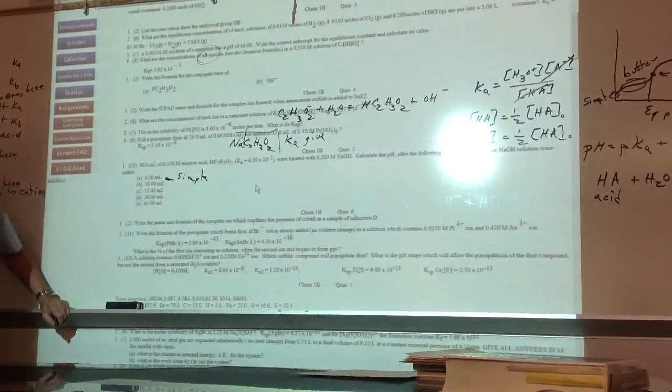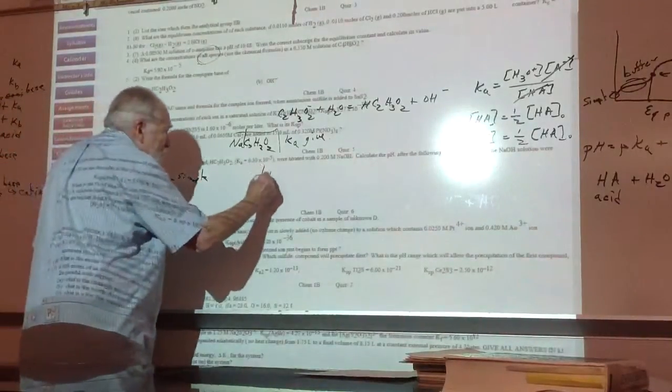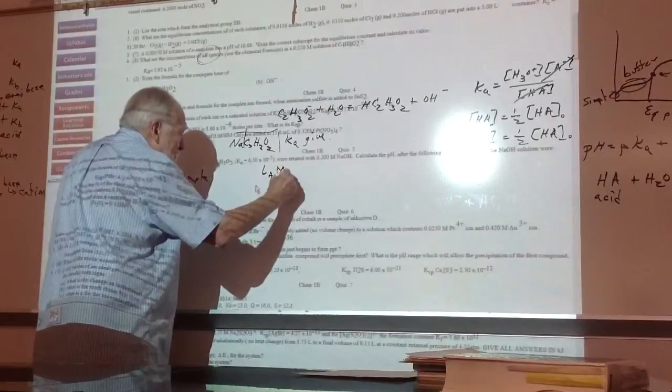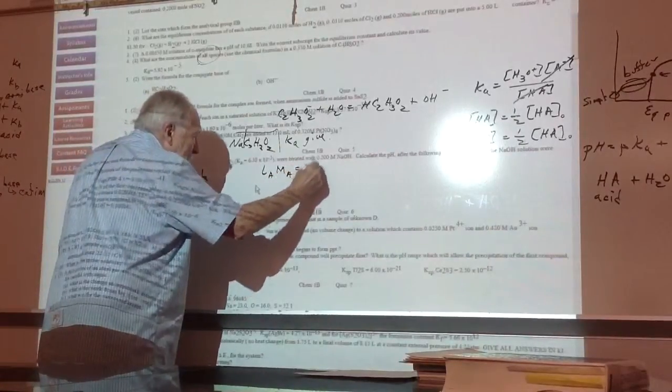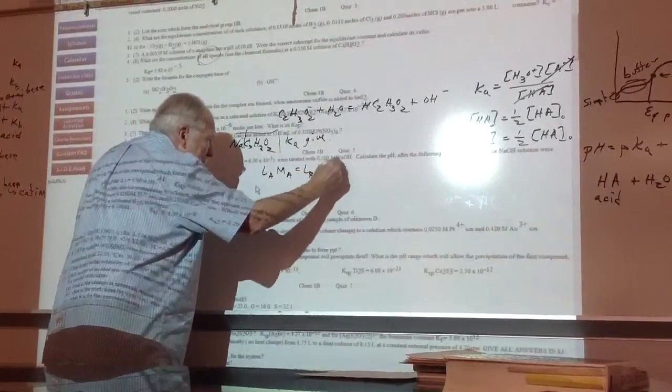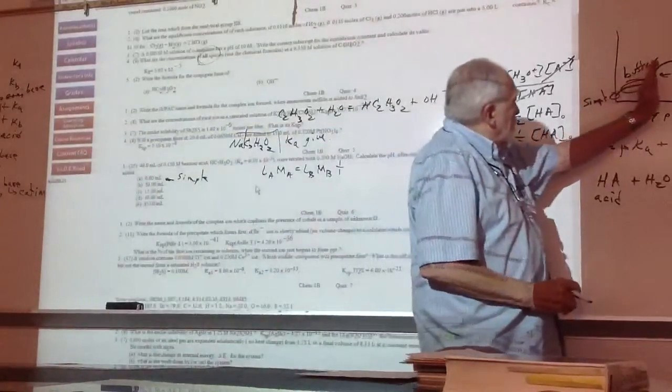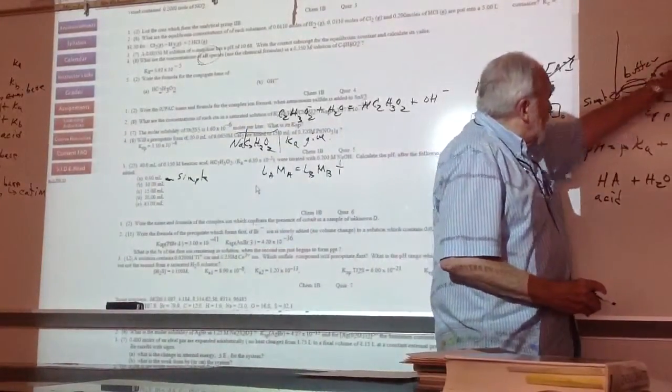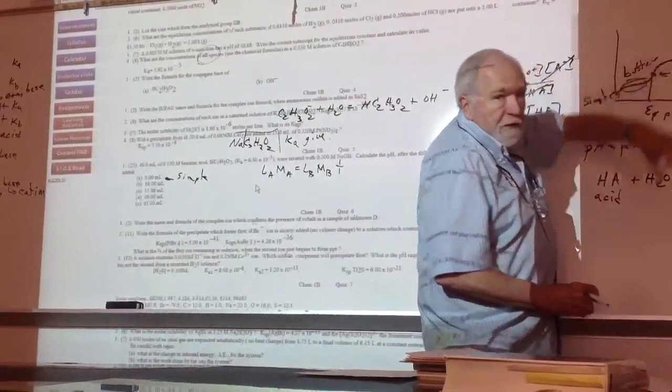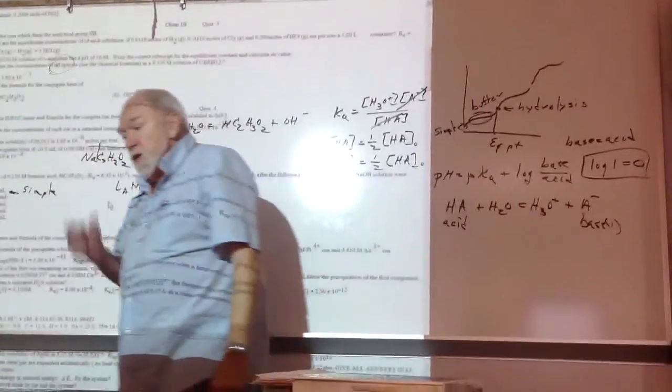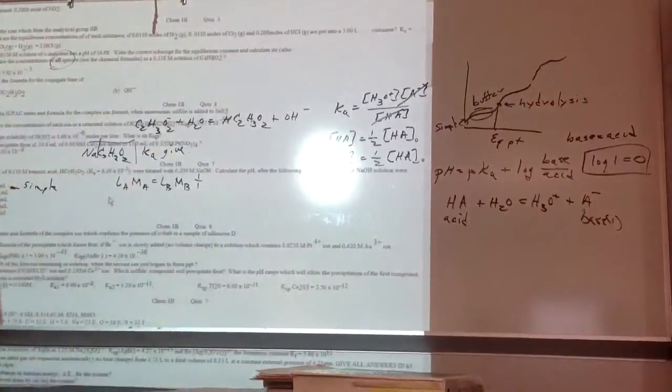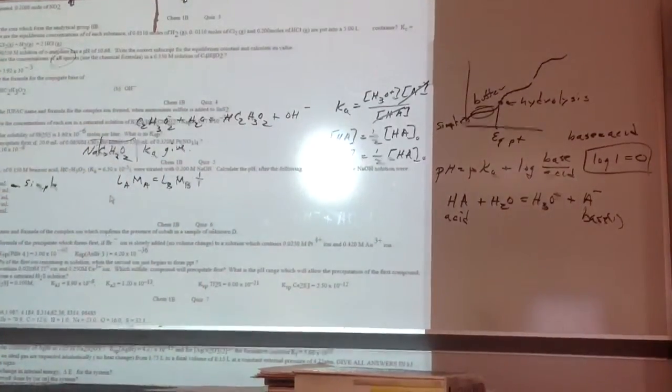So you're doing... And I'll put a one over one, because notice even in polyprotic's first equivalence point, the second equivalence point, this volume is equal to this volume. If you titrate each hydrogen, one hydrogen plus one hydroxide, or vice versa.